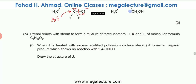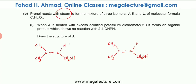Part B states that Prenol reacts with steam to form a mixture of three isomers J, K, and L of molecular formula C5H12O2. When Prenol reacts with water, the double bond reacts — on one side H attaches and on the other side OH attaches. The double bond changes into a single bond with H on one side and OH on the other.